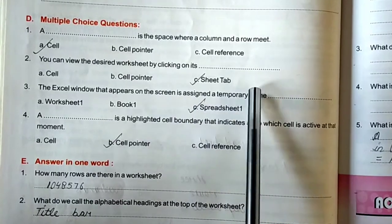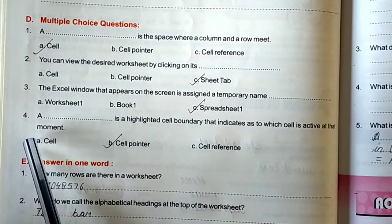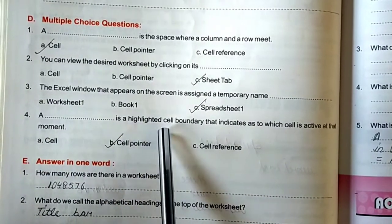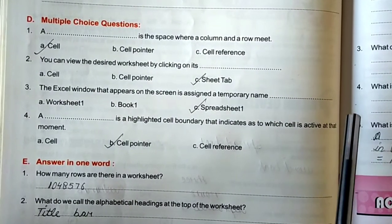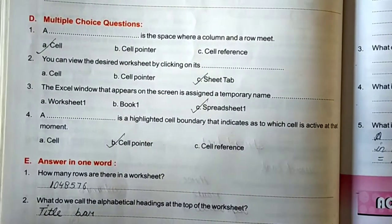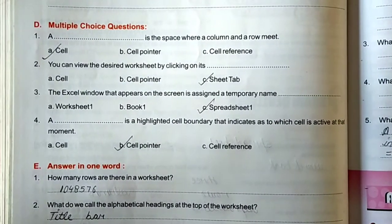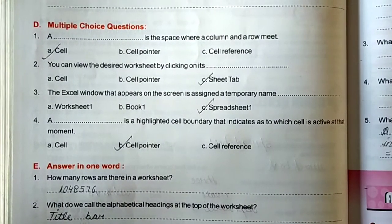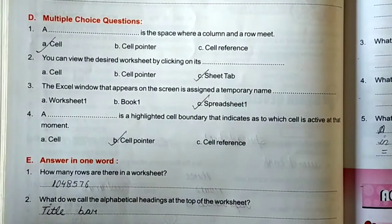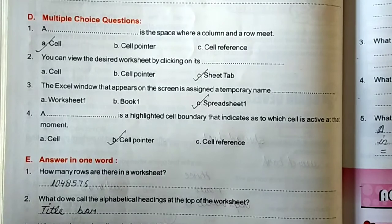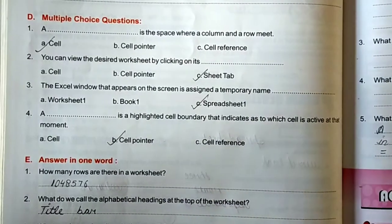And the last one is, a blank is highlighted cell boundary that indicates as to which cell is active at the moment. Cell, cell pointer, or cell reference. That is called cell pointer.